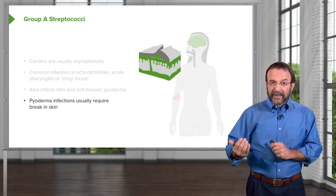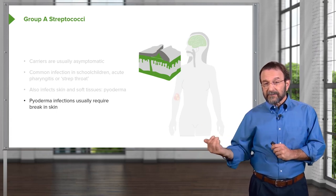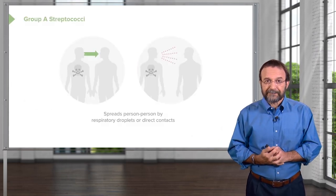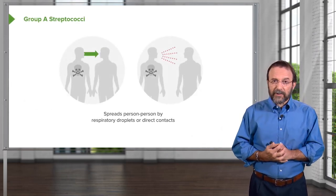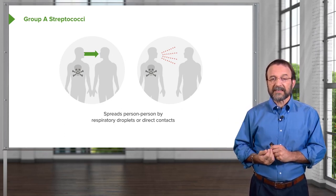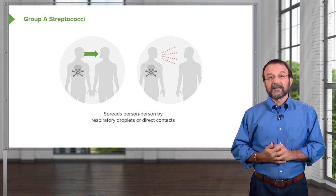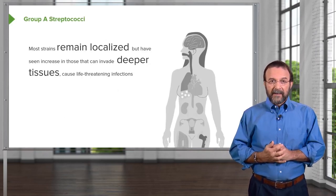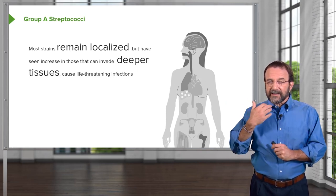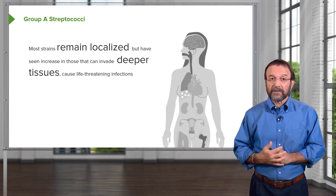If you're a carrier and you get a break in the skin, you can develop a pyoderma. If you're not a carrier but contact someone who has streptococci, you can also get a pyoderma. Streptococci spread person to person by respiratory droplets produced by coughing, sneezing, or talking, or by direct contact — very much like staphylococci.